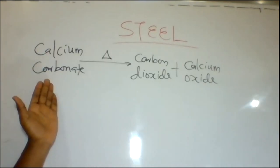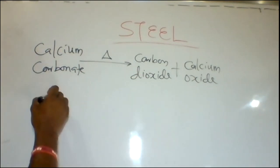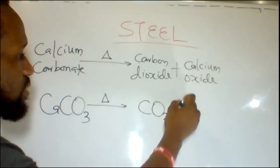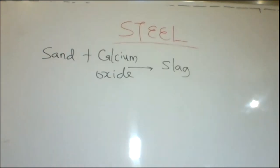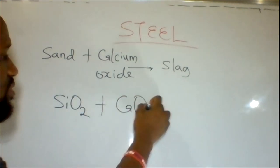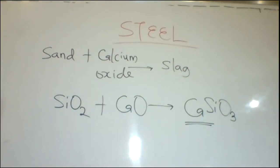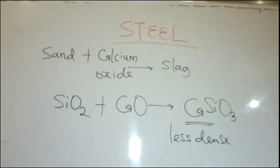The limestone added — calcium carbonate — in the blast furnace is decomposed by heat to form carbon dioxide and calcium oxide. This is needed to eliminate impurities in the iron ore. Iron ore is dug from underground, so it contains sand particles; sand is silicon dioxide (SiO2). The SiO2 combines with calcium oxide to form slag, which is calcium silicate. Slag is less dense than molten iron, so it can be decanted off at the top of the molten iron.